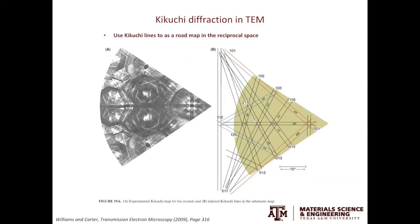The second use of Kikuchi lines in TEM is that we can use them as a roadmap. In many cases, for example if we are interested in taking high-resolution TEM images, we want to tilt the crystal to a low-index zone axis. Following the Kikuchi bands to where they converge together is usually where the low-index zone axes are. The third use of Kikuchi lines is that you can use them to determine the exact crystal orientation of your specimen in TEM. The principle is the same as that in EBSD, which I will not elaborate on here.